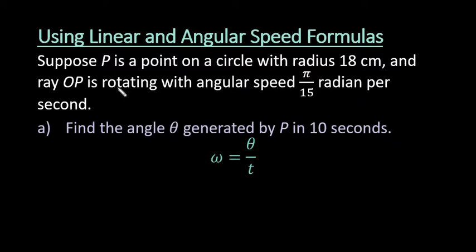So what we have here is suppose P is a point on a circle with radius 18 centimeters. Let me just give you a visual of what we have here and draw the best circle that I can. It's kind of hard to draw circles. So what we have is we have a circle and P is some point on this circle.